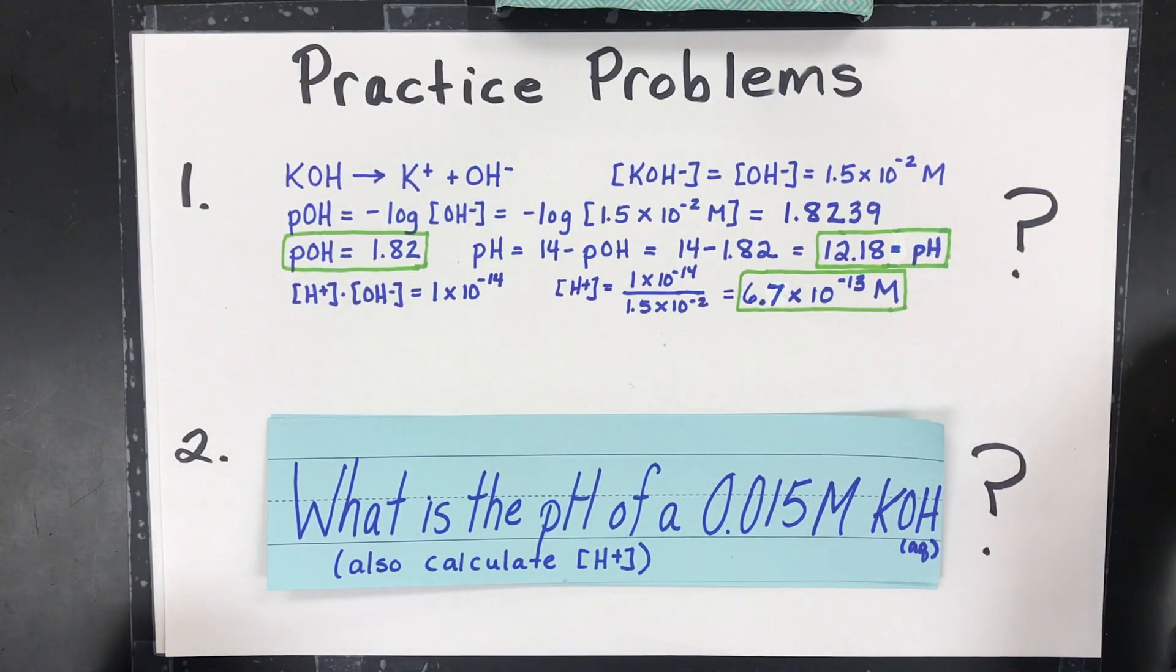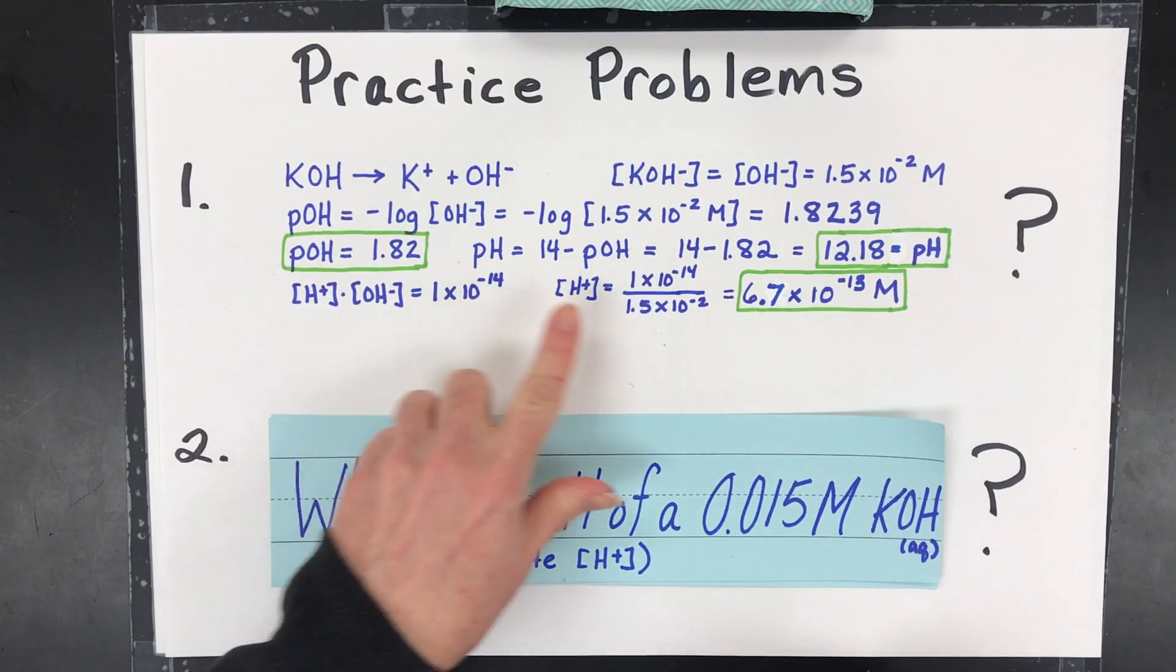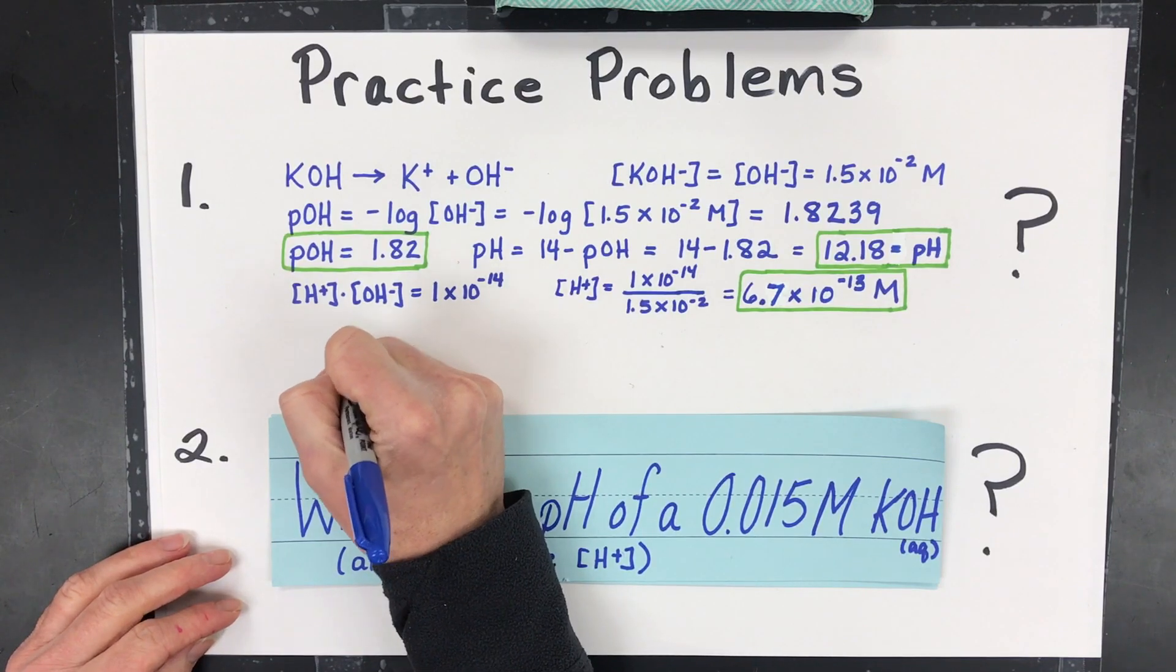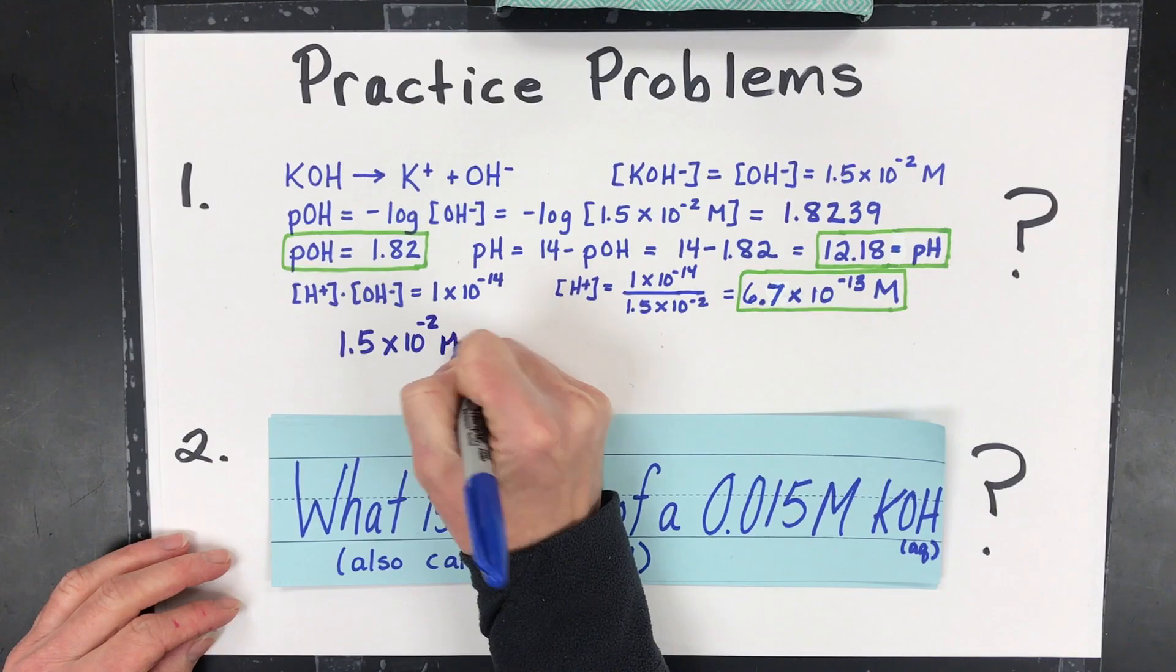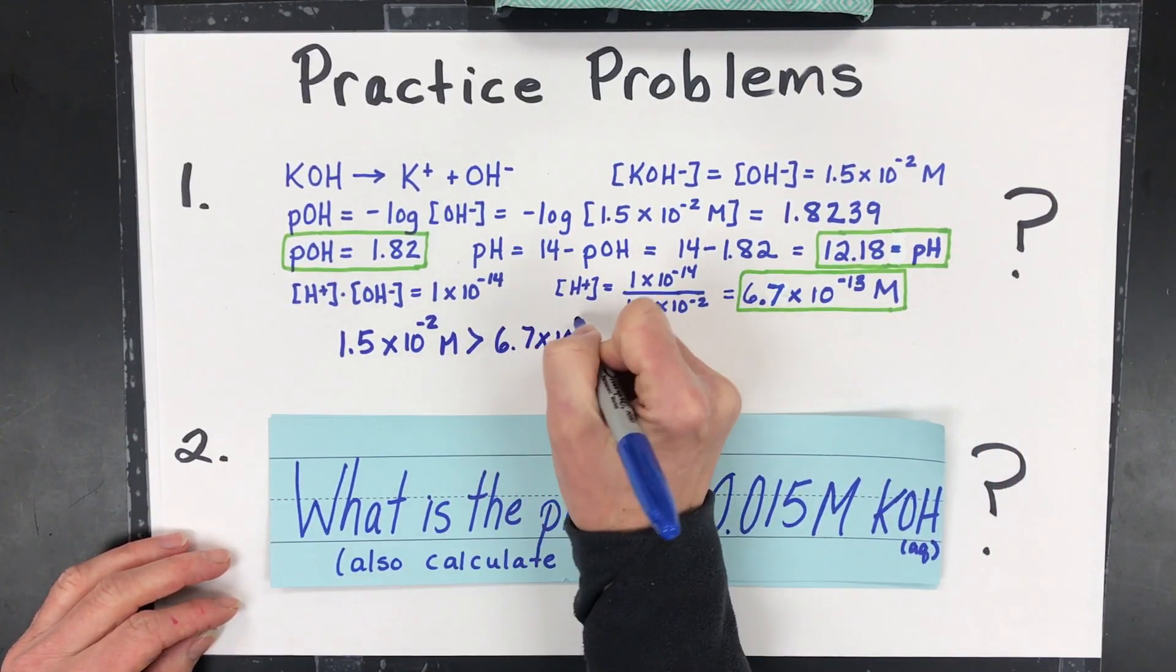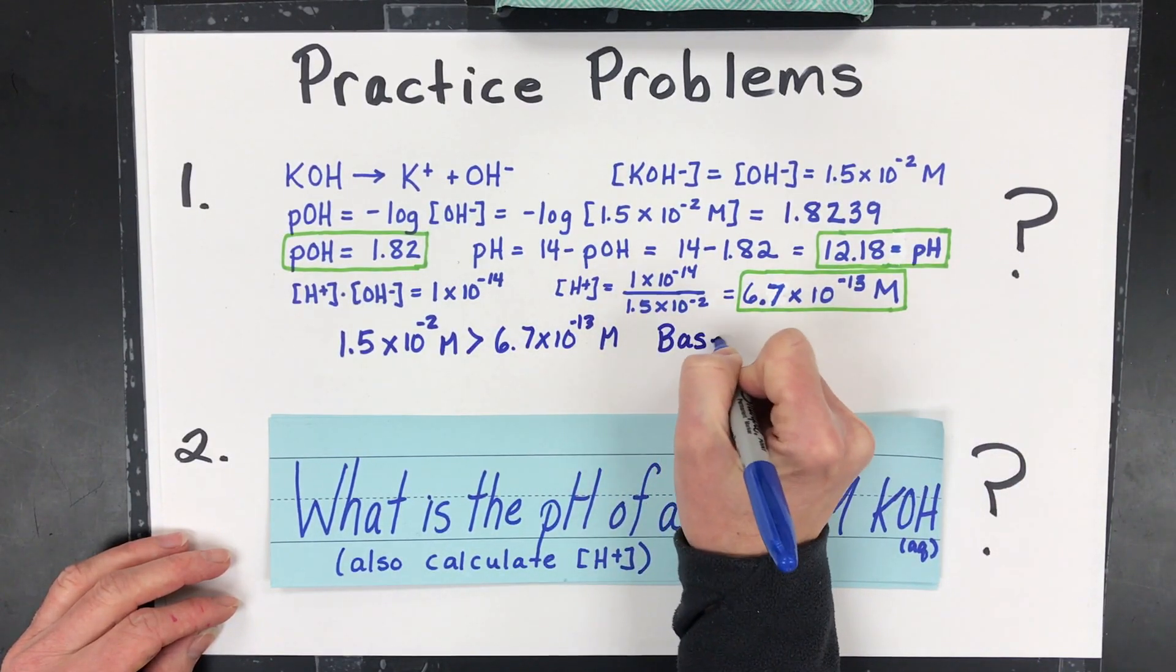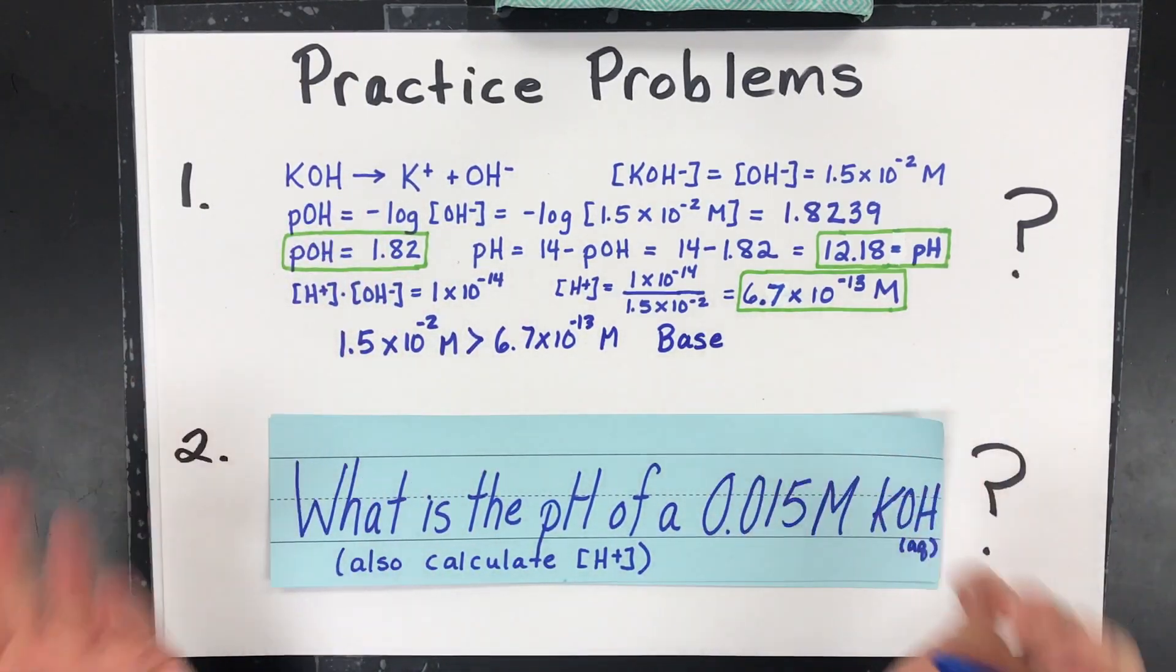The other thing I want you guys to think about, too, is when we calculate the hydrogen ion concentration, does this match up with that fact that I told you before? So if 1.5 times 10 to the minus 2 molar, is that greater than this tiny hydrogen concentration to the negative 13? Absolutely. Which is what makes this thing a base or basic. Even if you didn't know this was a base, it proves it now.